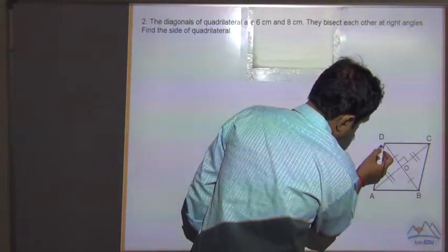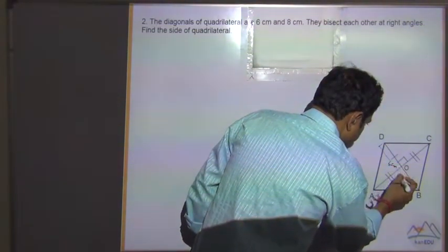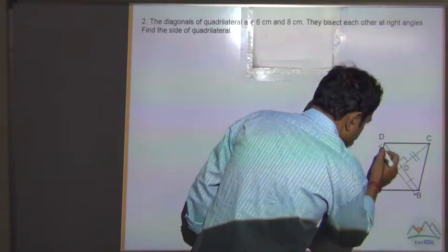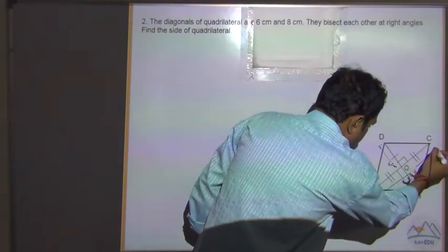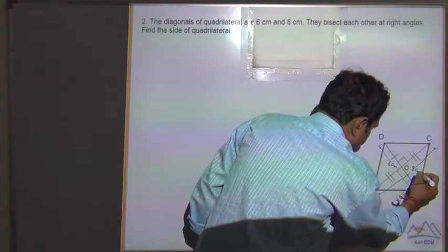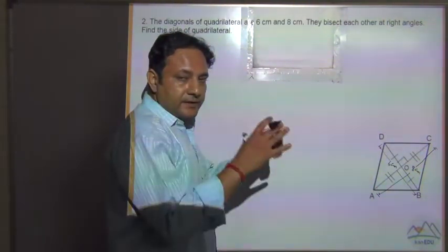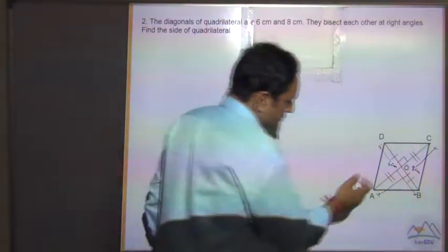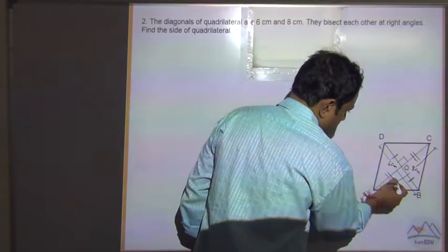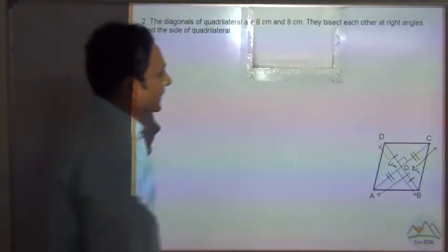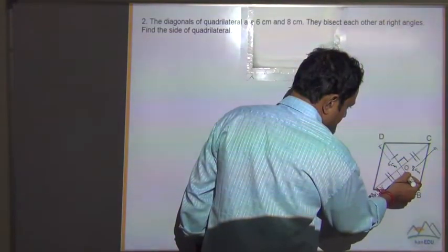So this is 6cm and this is 8cm. And they bisect each other. Bisect means divide it into two equal parts. So it means that this part is equal to this part and this part is equal to this part at right angle. So they are at right angle also.